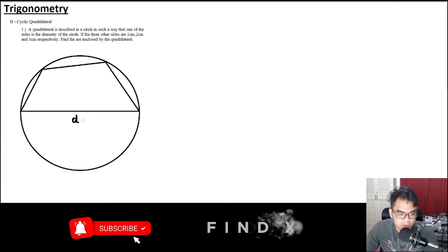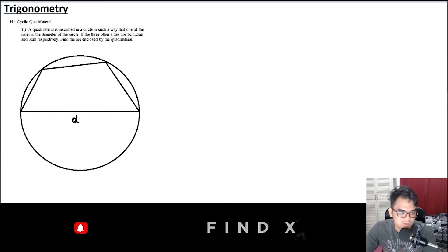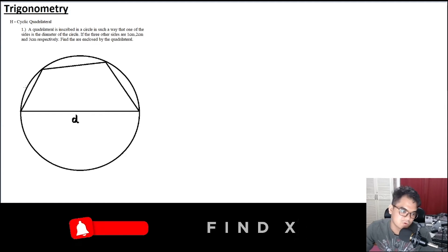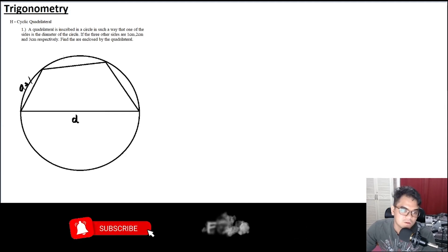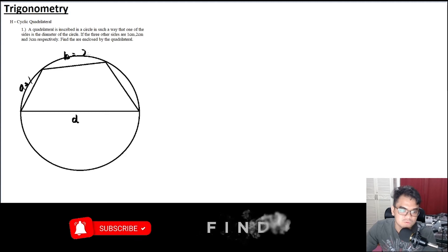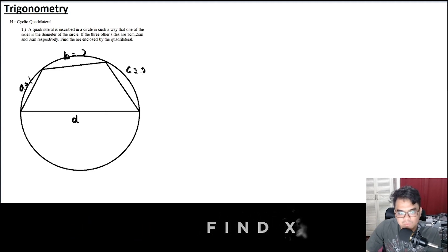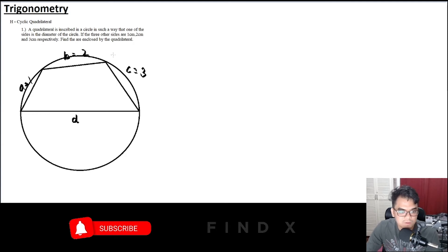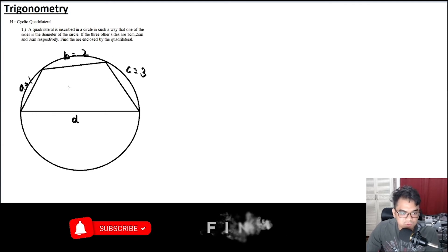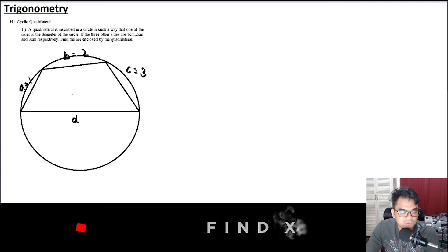We'll call the diameter side d. The other sides are: a = 1, b = 2, and c = 3 — all in centimeters.